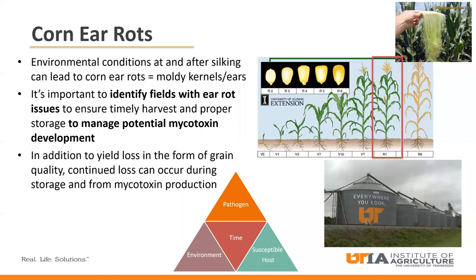Corn ear rots are diseases that are caused by a few different fungi that can colonize the ears or the kernels. And just like the name states, they break down these kernels, causing them to rot, leading to poor grain quality, lower test weights, and mycotoxin contamination. Today, we are going to be going over how to ID and manage some of these significant corn ear rots in Tennessee. But before we get into specifics on ID, I'd like to highlight our pest triangle for these pathogens.